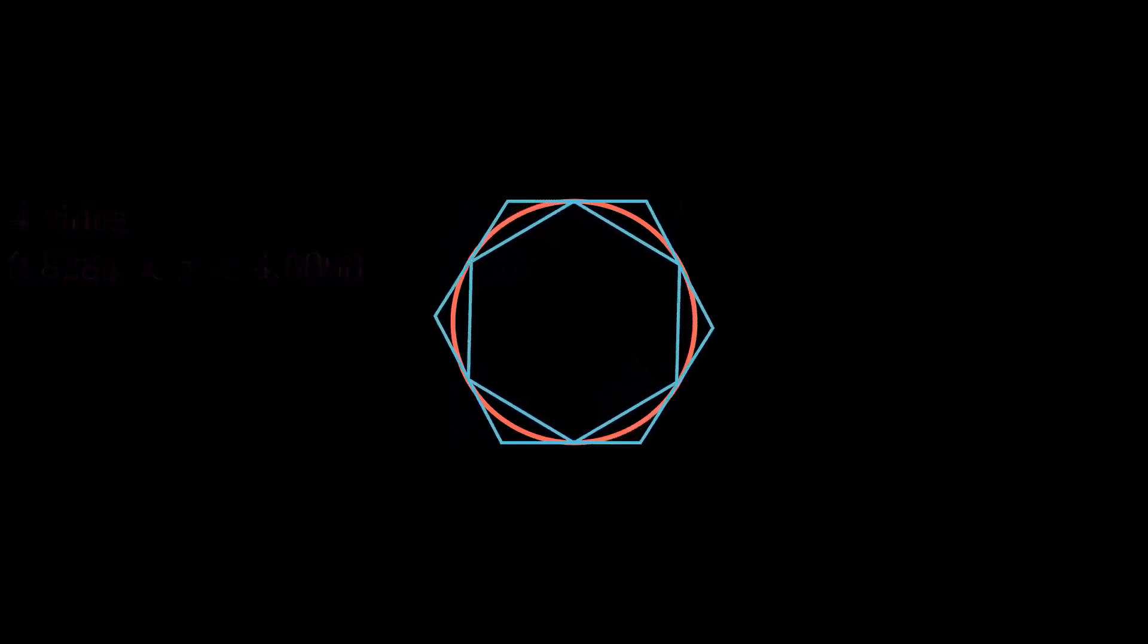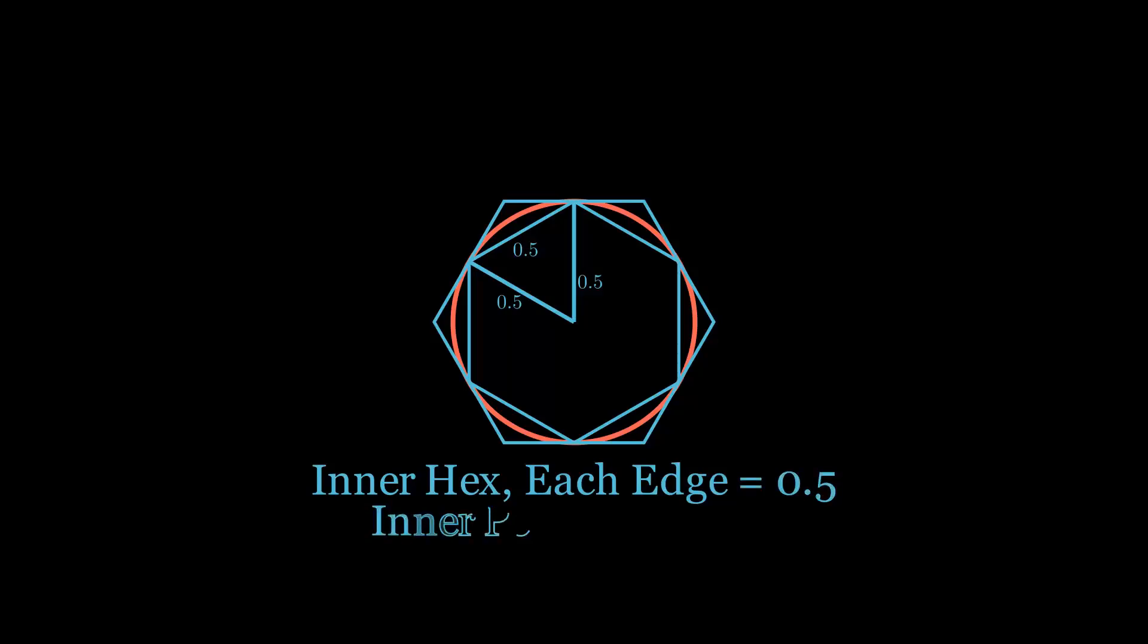For the inner hexagon, we again divide it into triangles. These are equilateral triangles. So since one side has a length of 0.5, then all the sides are 0.5. This results in an inner perimeter of 3.0.